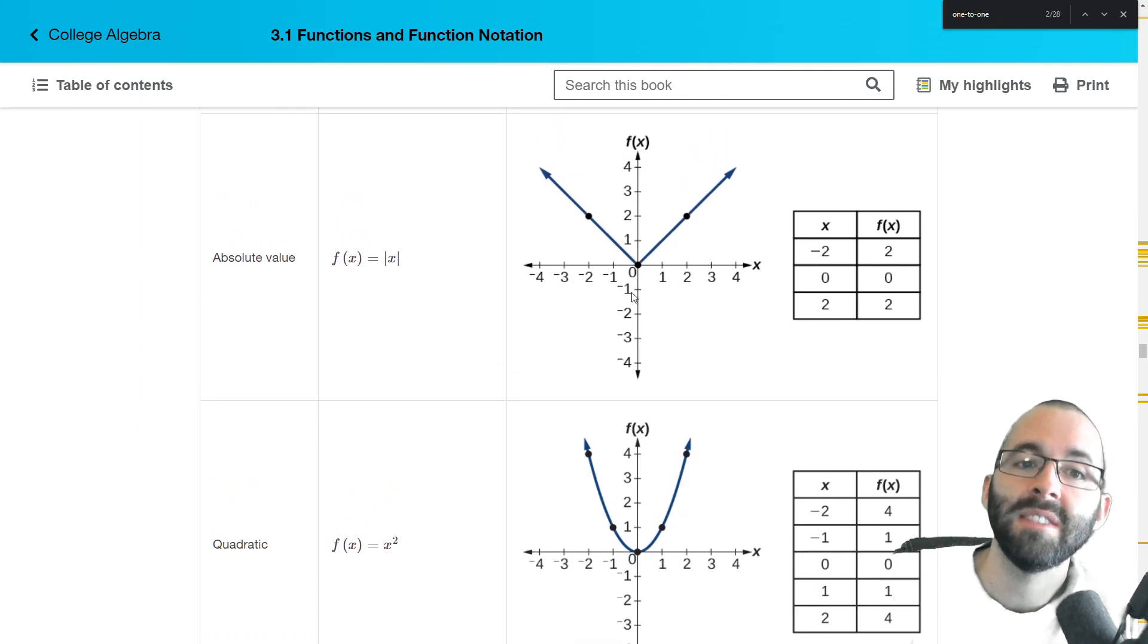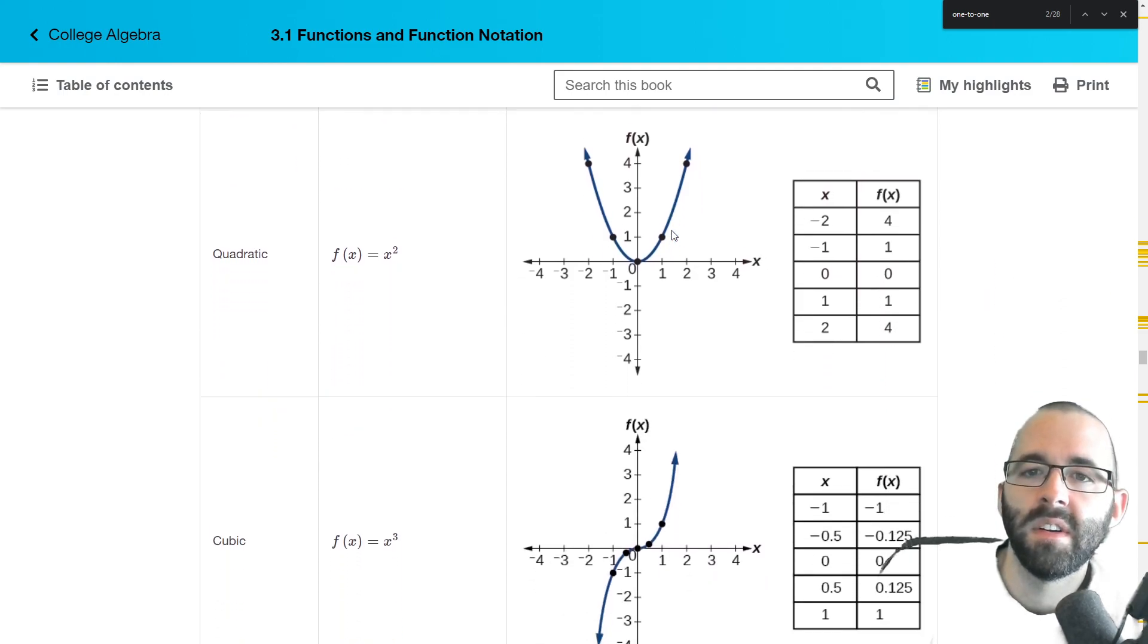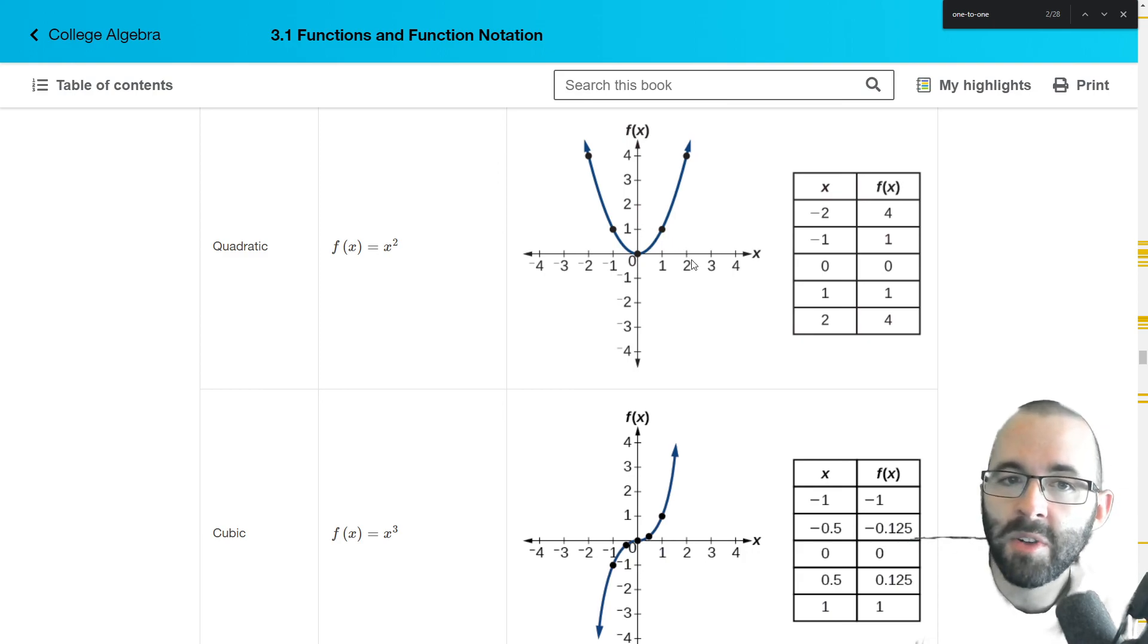Absolute value function is that V shape. We've talked about absolute values a bit in previous classes. It is not one to one, right? It fails the horizontal line test. We already kind of looked at that with a different one. And it has that nice V shape. Quadratics, parabolas, these are pretty familiar with most people. Again, not one to one. It fails the horizontal line test a bunch of places.